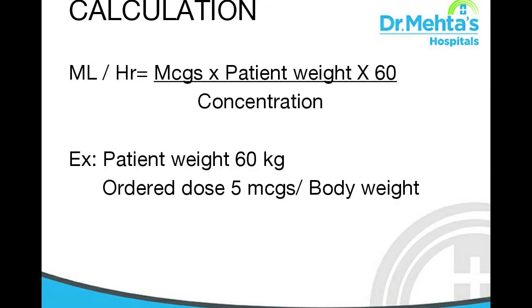Calculation: ml per hour equals microgram multiplied by patient weight multiplied by time in minutes (that is 60), divided by concentration.